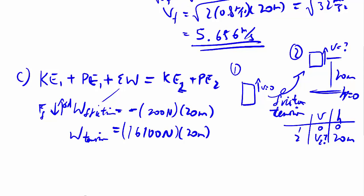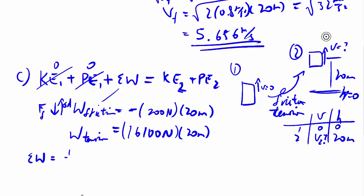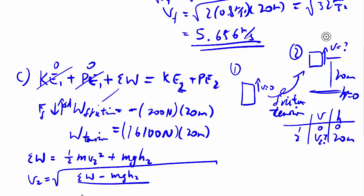So those two go away, because they were both 0. We'll keep the sum of work as a variable for now. Then we have 1 half mv2 squared, which we don't know, plus mgh2. Solving for v2 squared is the sum of work minus mgh2 over 1 half m.